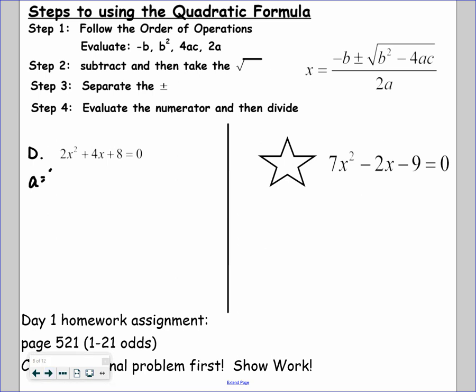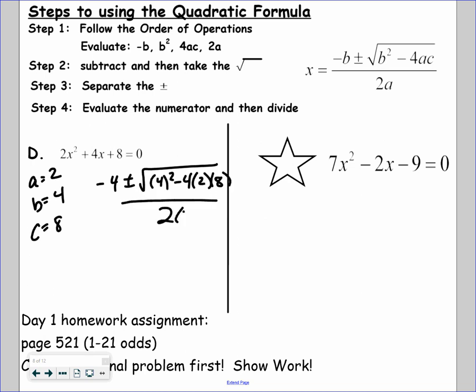A is 2, B is 4, C is 8. Negative B plus or minus the square root of B squared minus 4AC, all over 2A. We have a problem — when I do this, I end up getting 16 minus 64, which is negative 48. Am I allowed to take the square root of a negative? We talked about this in section 9-3 — I'm not allowed to take the square root of a negative. It's going to be imaginary, which you'll learn in Algebra 2. So the square root of negative 48 does not work, and therefore there is no solution to this question.